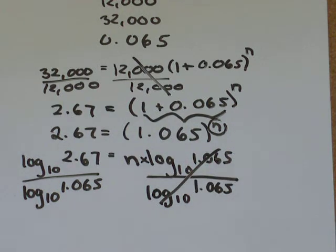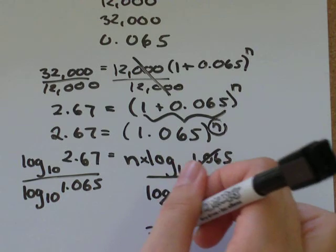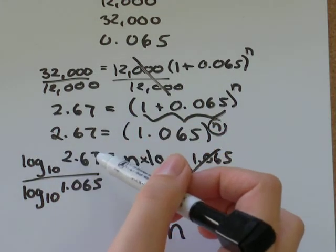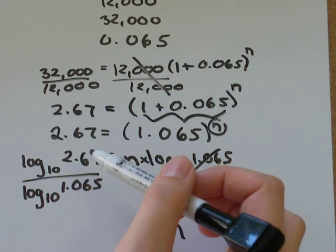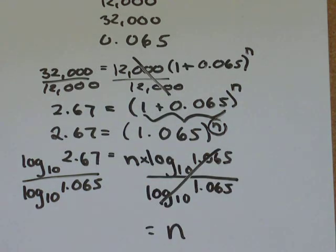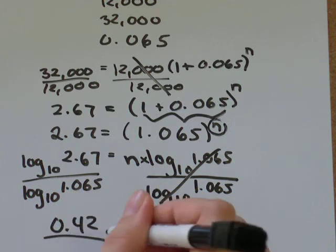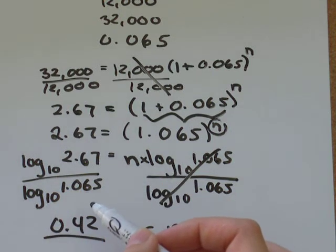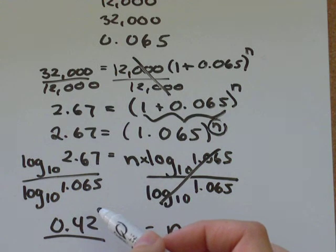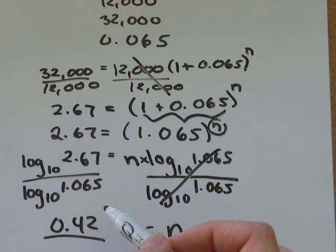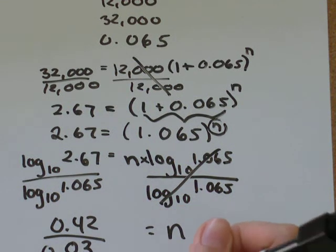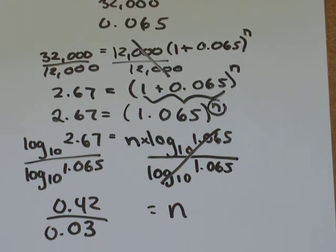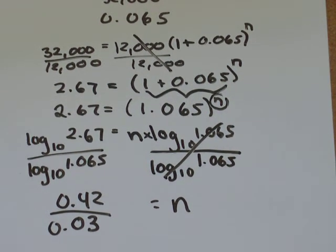I've got n equals log base 10 of 2.67, which is about equal to 0.42, over log base 10 of 1.065, which is about equal to 0.03. All I need to do next is 0.42 divided by 0.03.